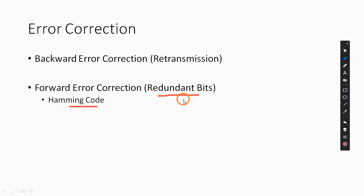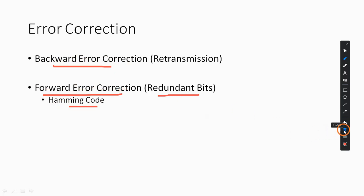Using Hamming code you can both detect and correct errors. Hamming code introduces extra redundant bits inserted within the data bits at specific locations determined by the algorithm. These extra bits allow Hamming code to detect the exact location of errors and correct up to two bits. If more than two bits are in error, the technique will not work. That covers error detection and correction techniques — backward correction and forward error correction.